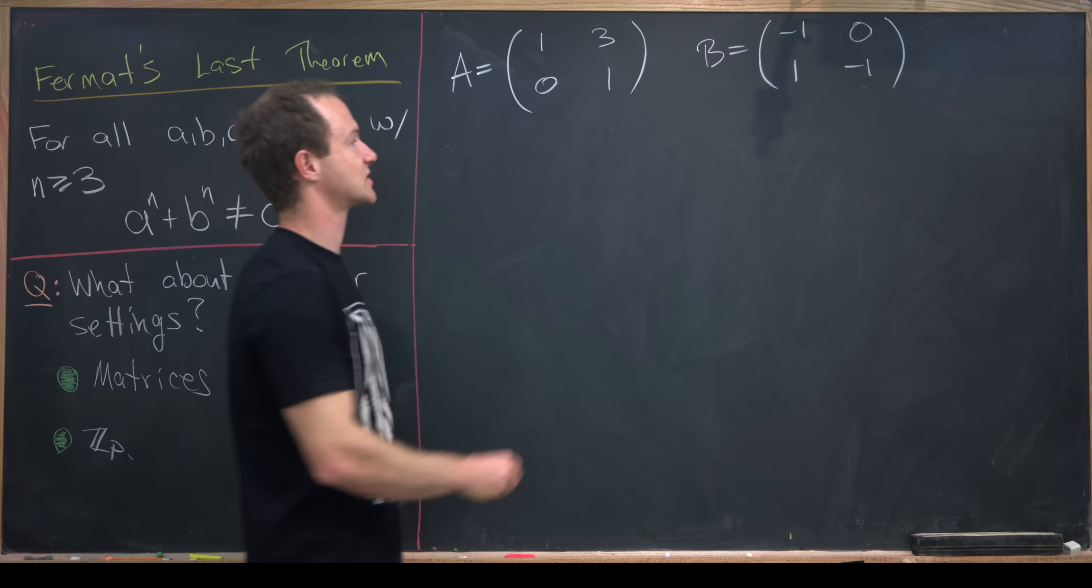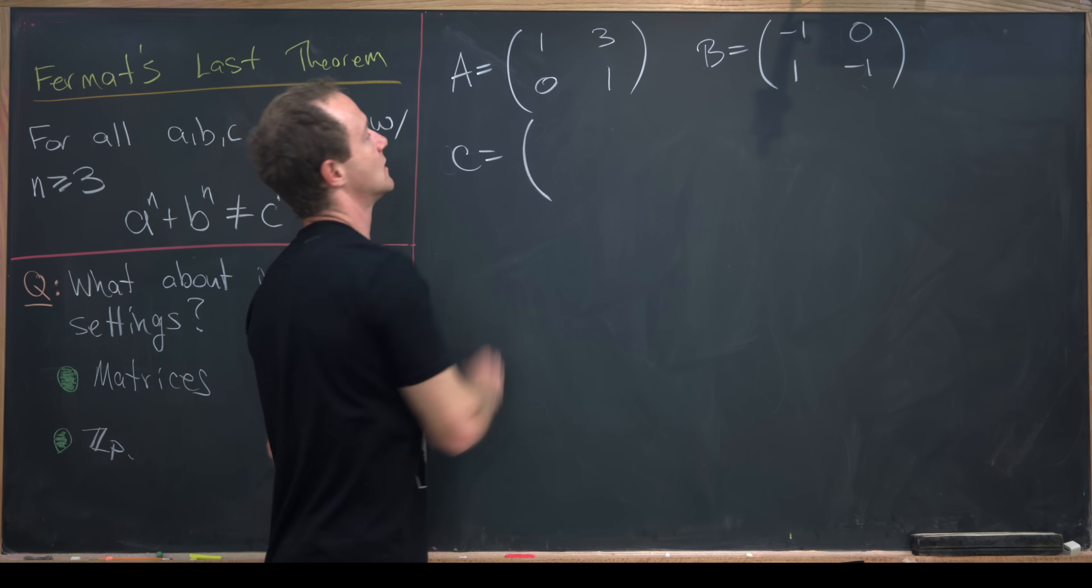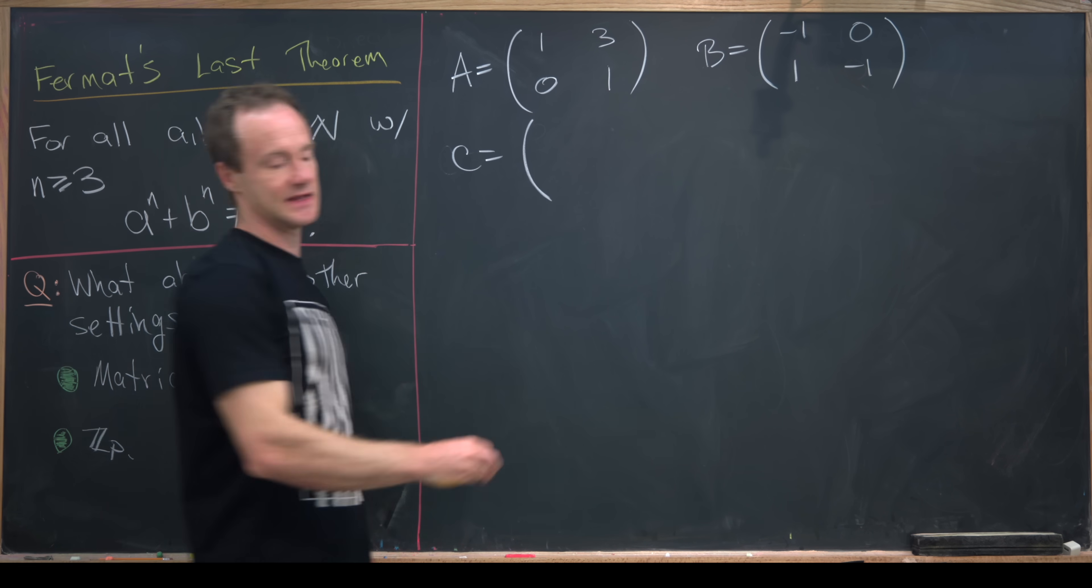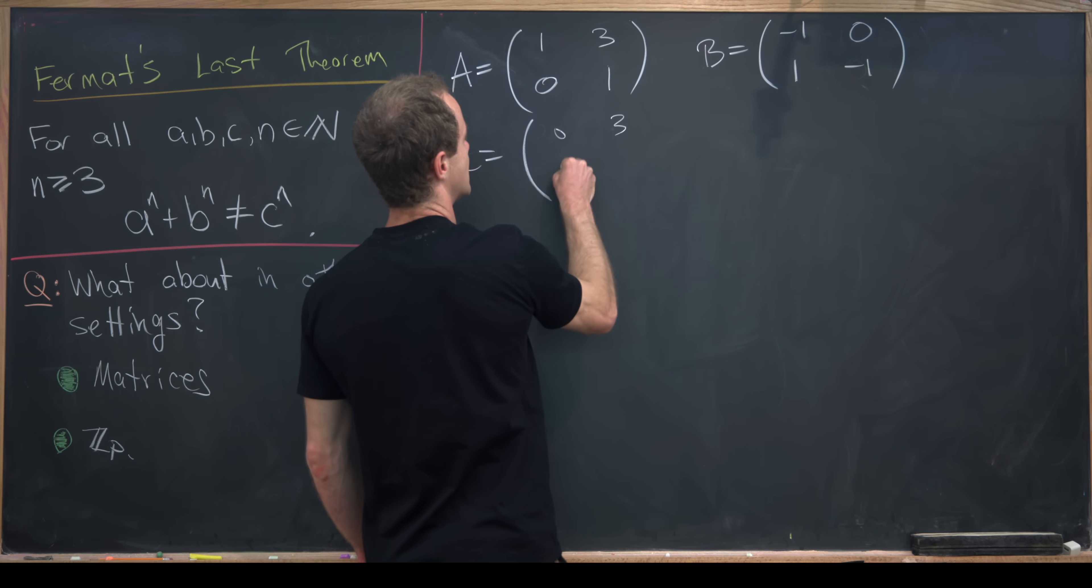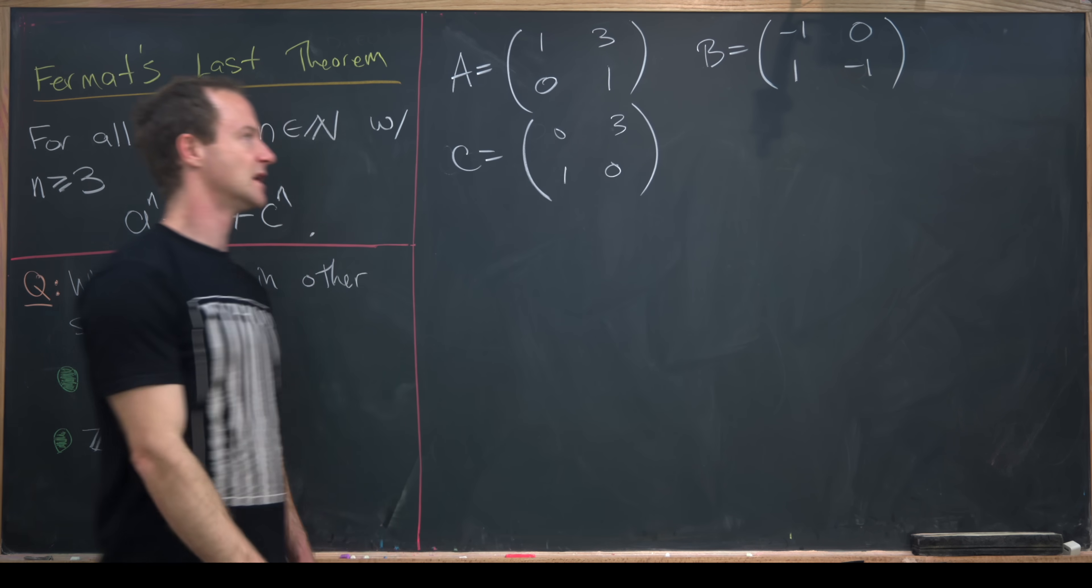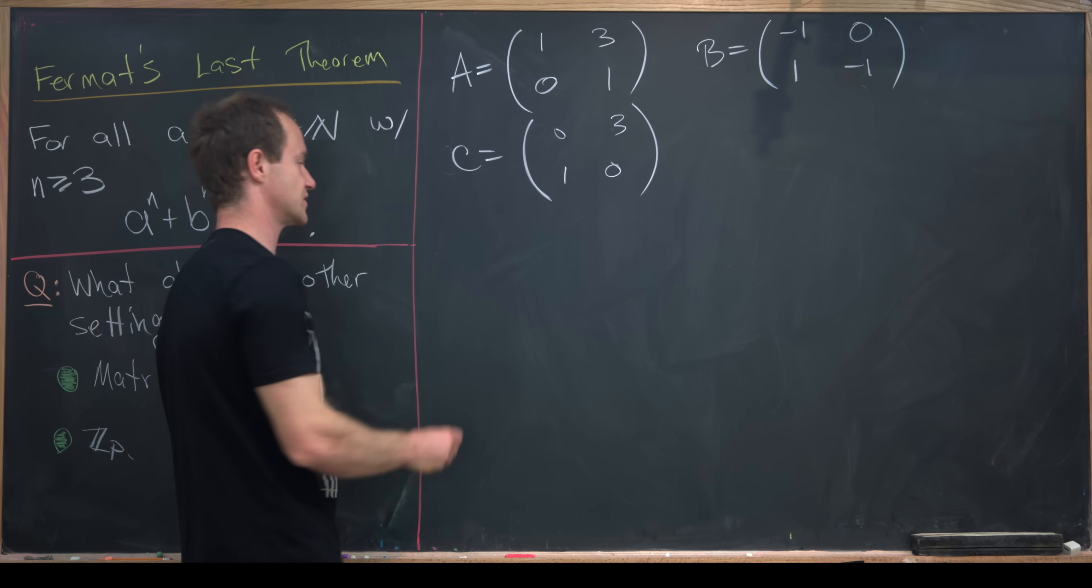And then finally, a matrix capital C, which I'll define as 0, 3, 1, 0. Now we want to find the cube of each of these matrices.